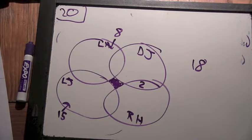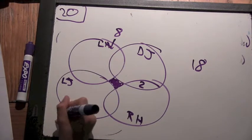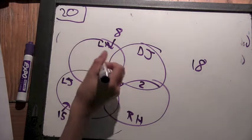Well, 8 plus 15 is 23, so we need the numbers in here to be smaller.